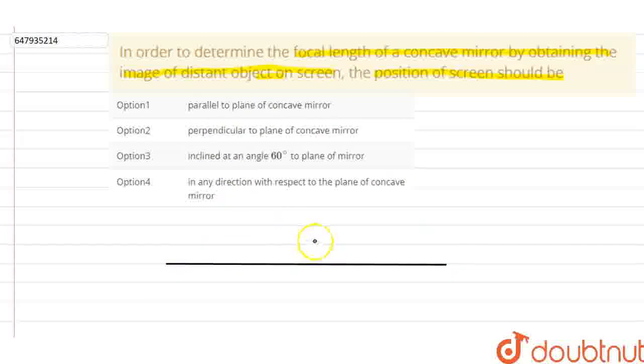Let's suppose it's a concave mirror. This is a concave mirror, let's suppose. This is a distant object. This image will be focused on the focus.